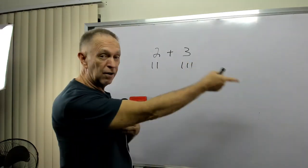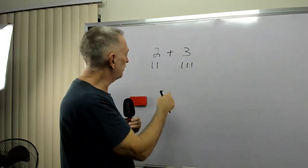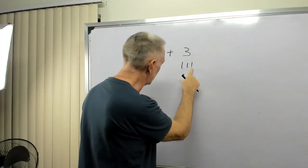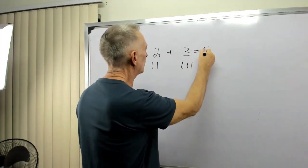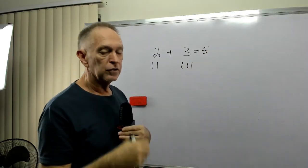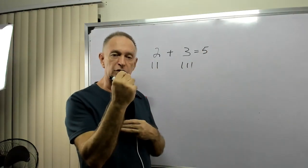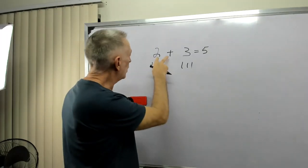Now, I just count the total number of fingers. One, two, three, four, five. Two plus three equals five. So just remember, change it into fingers from the number.